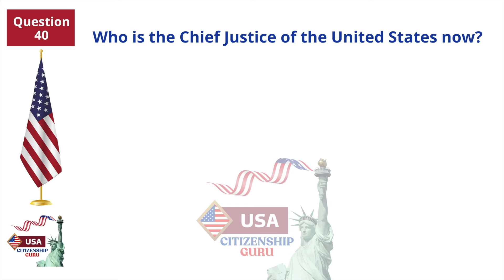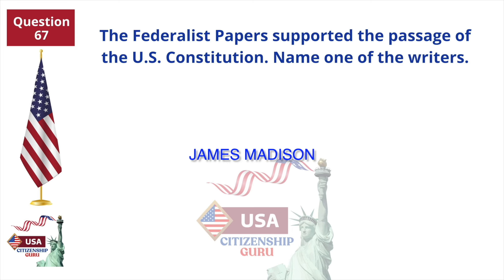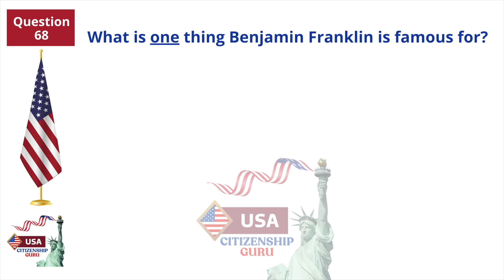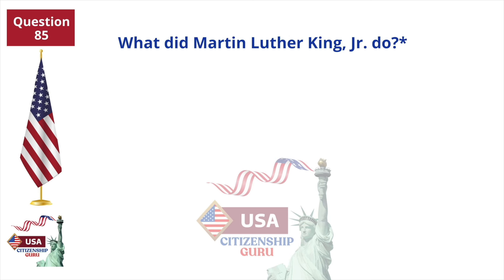The Federalist Papers supported the passage of the U.S. Constitution — name one of the writers. James Madison. What is one thing Benjamin Franklin is famous for? U.S. diplomat. What did Martin Luther King Jr. do? Fought for civil rights.